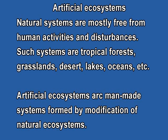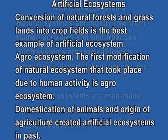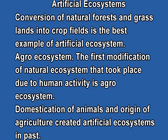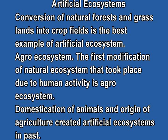Now we will discuss about the artificial ecosystem. Natural systems are mostly free from human activities and disturbances — that is why they are surviving up till now. Such systems include tropical forests, grasslands, deserts, lakes, oceans, etc. Artificial ecosystems are man-made ecosystems formed by modification of natural ecosystems. The conversion of natural forests and grasslands into crop fields is the best example. The agro system is the most common example, arising due to human needs for food.